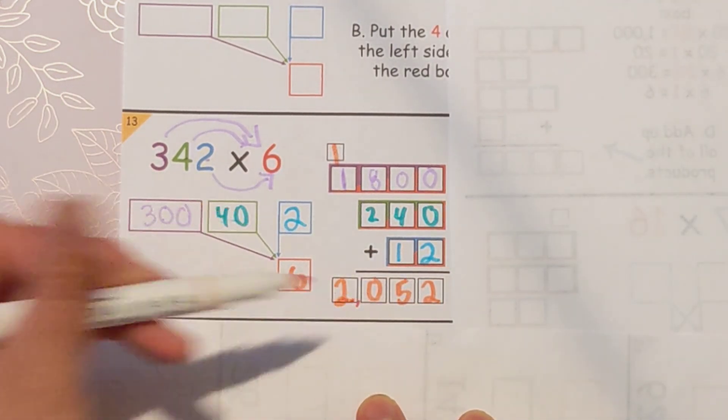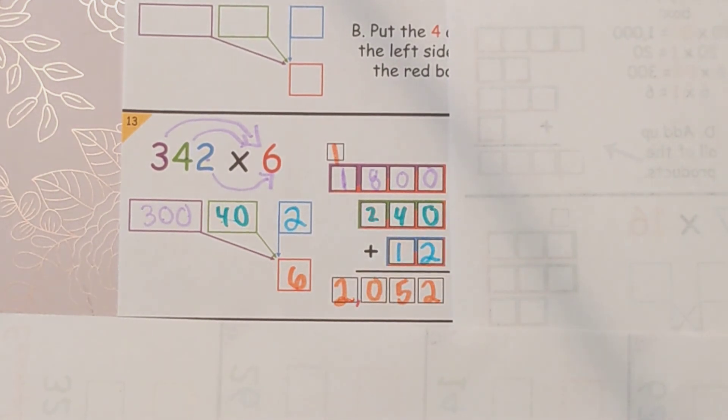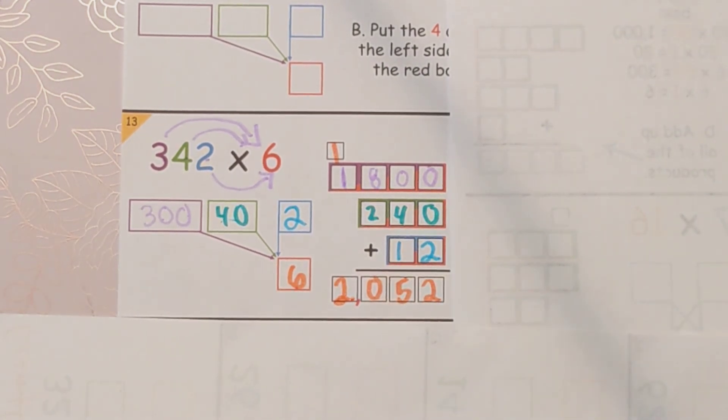So we got 2052. And that's how we do partial products, three digits times one.